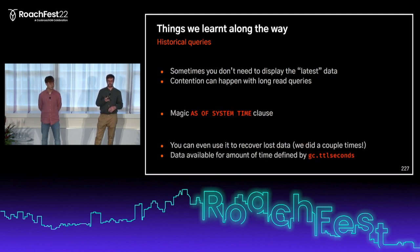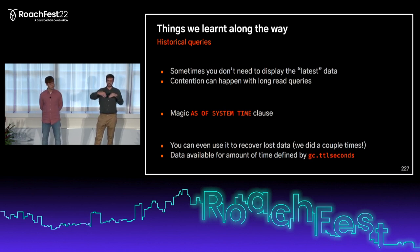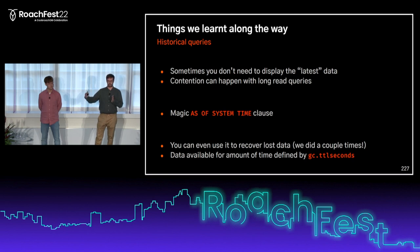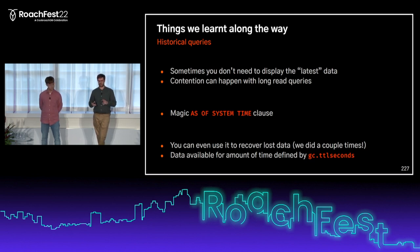Finally, the AS OF SYSTEM TIME feature — I think this was mentioned in already five different talks today. When you need to query data while writing at the same time on the same tables and don't need the latest data, you can use this to get much better performance and prevent contention. It's also useful because if you delete data by accident, you can actually recover that data during the window defined by the GC TTL seconds setting, which is 25 hours by default. We've used this a couple of times in the past.